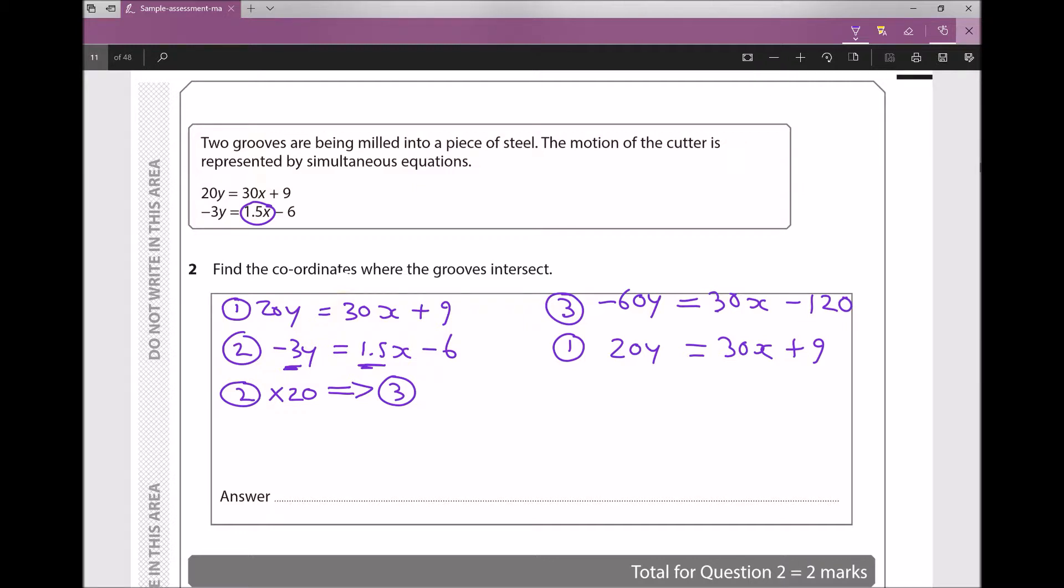I can either do equation one minus equation three, because that will get rid of those x components, or I can do equation three minus equation one. Just so that all of my numbers remain positive, I'm going to do equation one minus equation three. And that's going to give me a new equation which I'll call equation four.